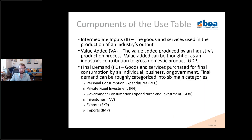As a brief recap and to introduce some acronyms: the intermediate input section shows goods and services used in the production of an industry's output; the value added section can be thought of as an industry's contribution to gross domestic product (GDP) — when you sum all industries' value added from the use table, you get nominal GDP for that period. The final demand section covers goods and services purchased for final consumption by individuals, businesses, or government, categorized into six main areas: personal consumption expenditures (PCE), private fixed investment (PFI) — businesses purchasing capital — government consumption expenditures and investment (gov), inventories, exports, and imports.